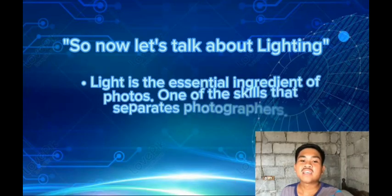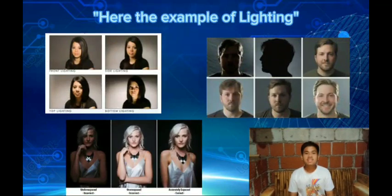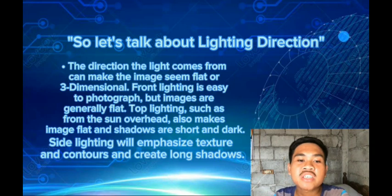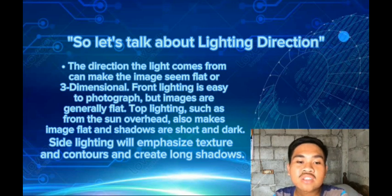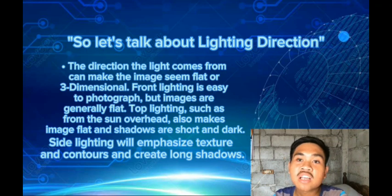Now let's talk about lighting. Light is the essential ingredient of photos and one of the skills that separates great photographers. The direction the light comes from can make an image seem flat or three-dimensional. Front lighting is easy to photograph but images are generally flat. Top lighting, such as from the sun overhead, also makes images flat and shadows short and dark. Side lighting will emphasize texture and contours and create long shadows.